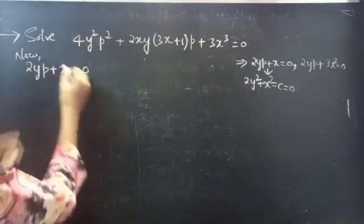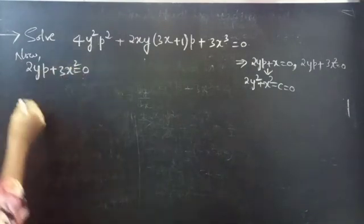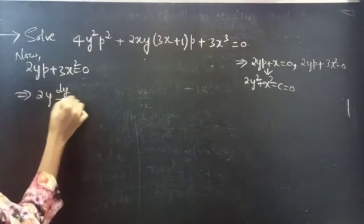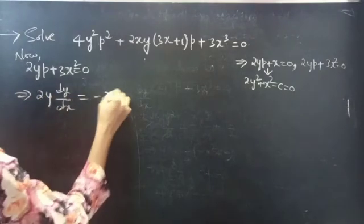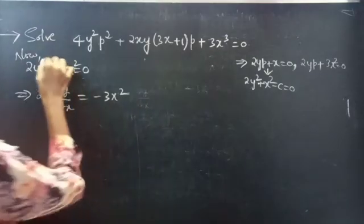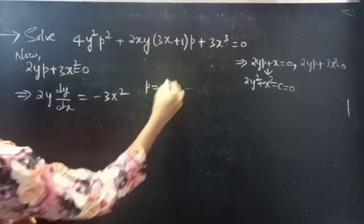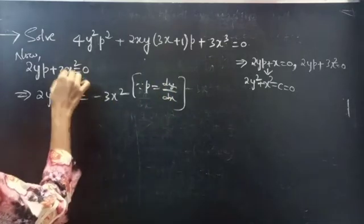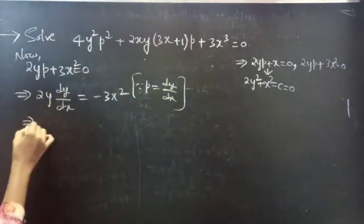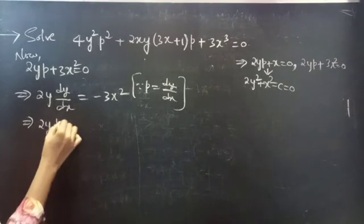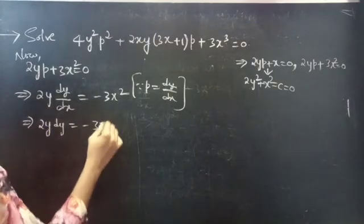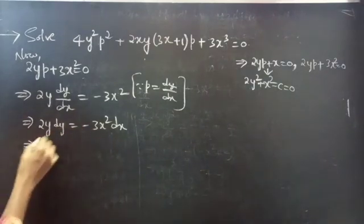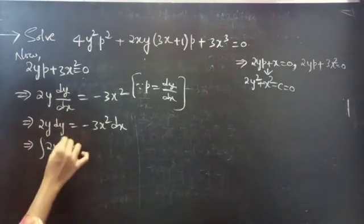Now consider the second one: 2yp + 3x² = 0. Then 2y·dy/dx = −3x². We replace p by dy/dx and take 2 to the RHS. Then, 2y·dy = −3x²·dx. Since variables are separable, we integrate on both sides.